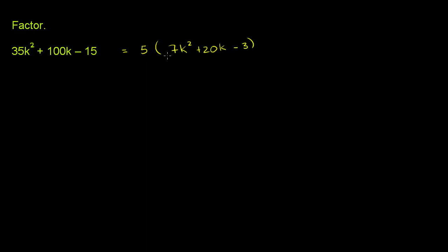So we were able to factor out a 5, but we still don't have a 1 coefficient here. So we're still going to have to factor by grouping. But at least the numbers here are smaller.